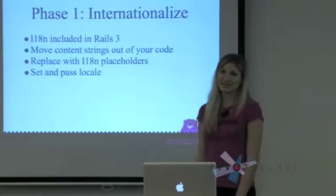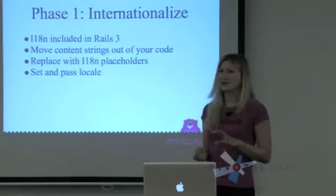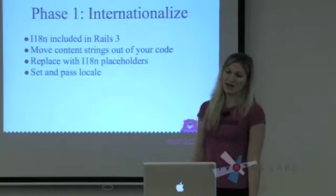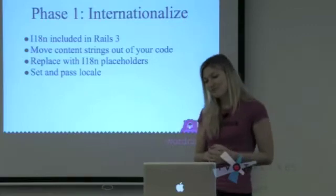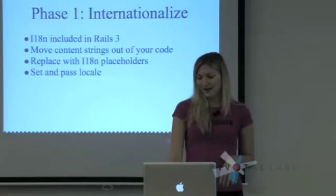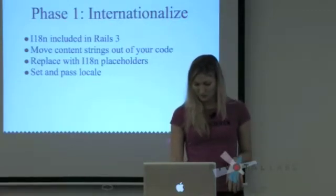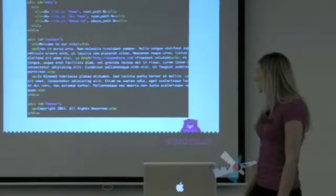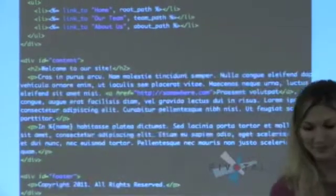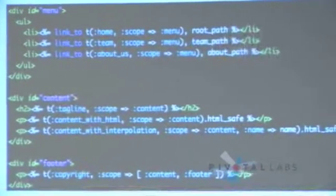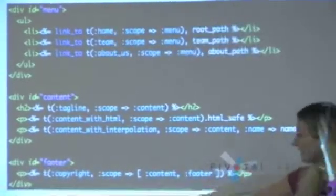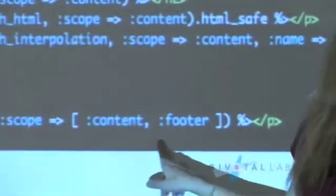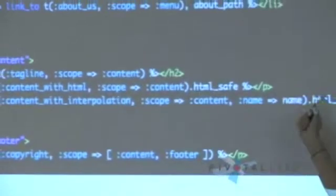The first phase is internationalization. If you're on Rails 3, the i18n libraries are all included, so you don't have to do anything to set that up. Basically, it involves abstracting your content out of your code and into separate locale dictionaries. Then in your code, you replace the content with i18n placeholders. And then finally, set and pass the locale so that Rails knows which locale to look up. This is what your view code might look like before internationalizing — you can see all the content is there. And this is what it looks like after — you can see the i18n translate calls here. This is basically your content key, so it's going to look up in the dictionary for the copyright content. You can scope it to organize your stuff better, and you can do things like variable interpolation.